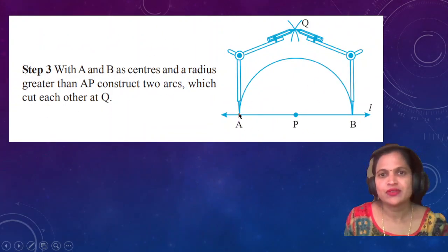Next step: With A and B as centers, with radius greater than AP, draw two arcs.